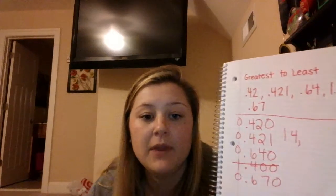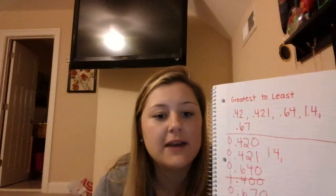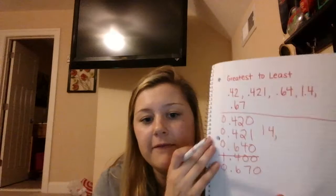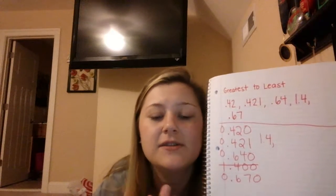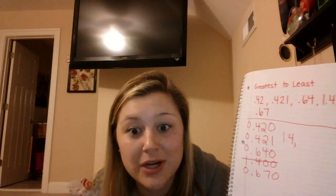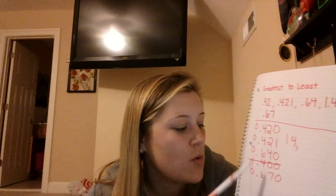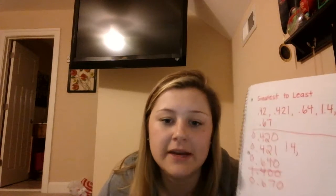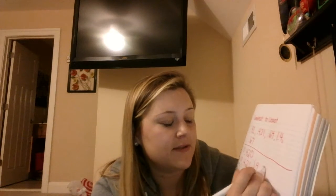I'm going to cross that off because I'm done with it. I have no other whole numbers, so now I go to my next column. I have 4, 4, 6, and 6. I know 6 is going to be my next biggest number, but I can't determine which one is bigger without going to the next column. I have 6, then 4 and 6, then 7. I know that 7 is bigger than 4, so I'm going to put 6.7 first and then 6.4.